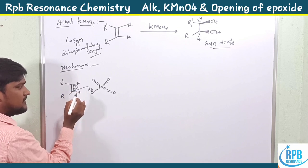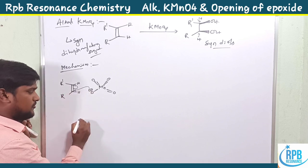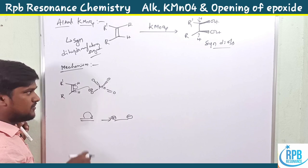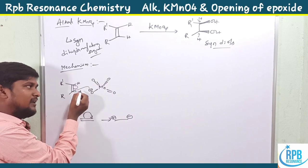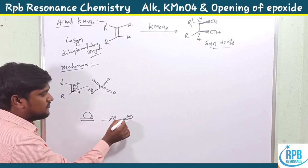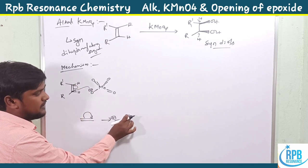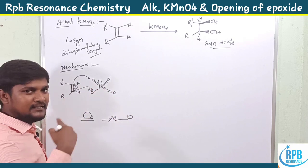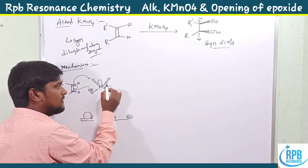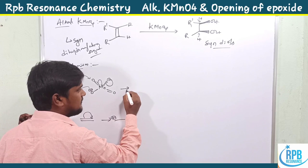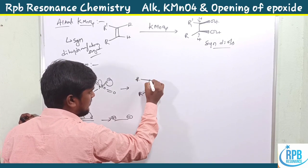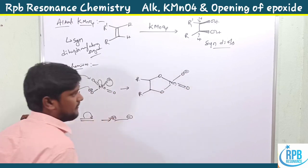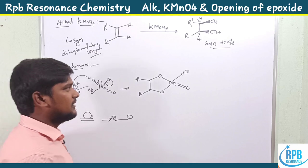The O⁻ attacks the pi bond — electrons from the double bond move toward the negatively charged oxygen. The negative charge then attacks the manganese, and the bonded electrons shift toward manganese, making one of the double-bond oxygens become O⁻. This results in the formation of a manganese ester.